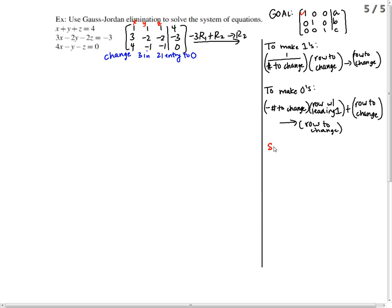Here's my scratch. Negative 3, row 1. Negative 3, negative 3, negative 3, negative 12. I'm going to add that to row 2, 3, negative 2, negative 2, negative 3. I get 0, negative 5, negative 5, negative 15. This is my new row 2.